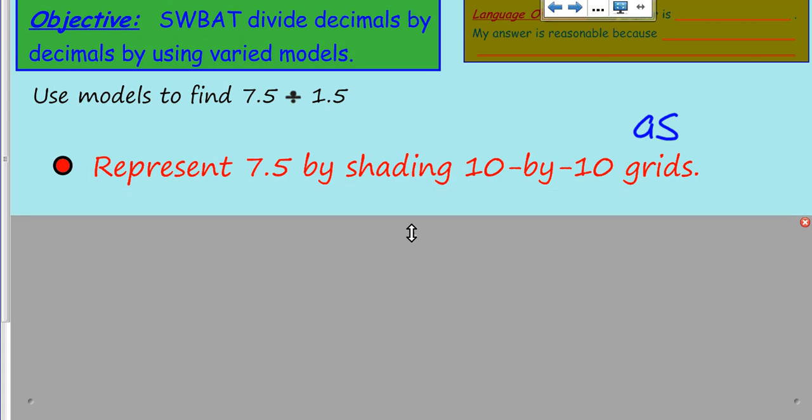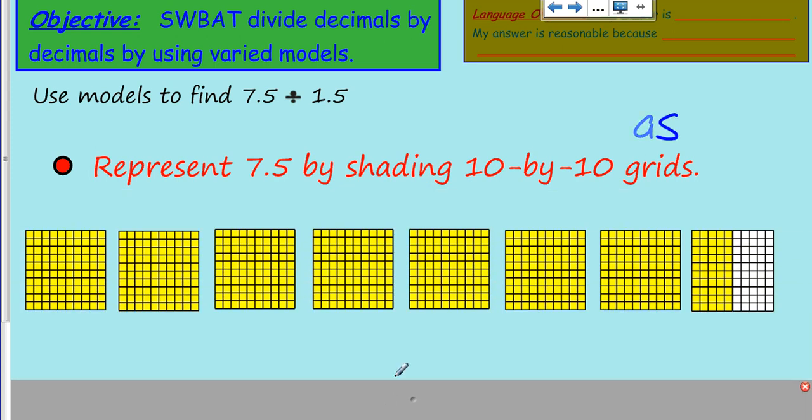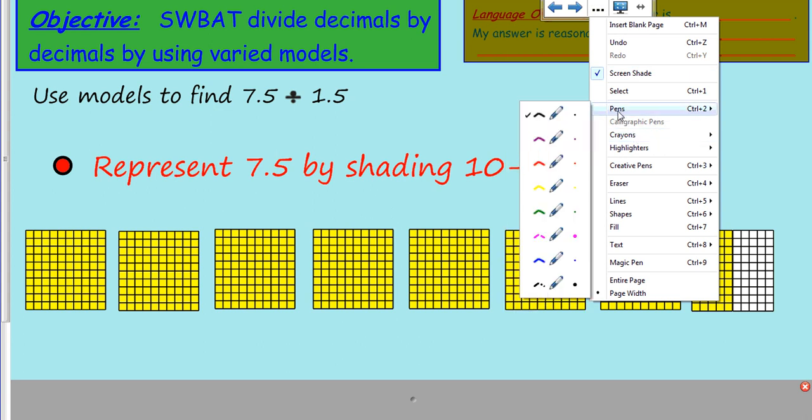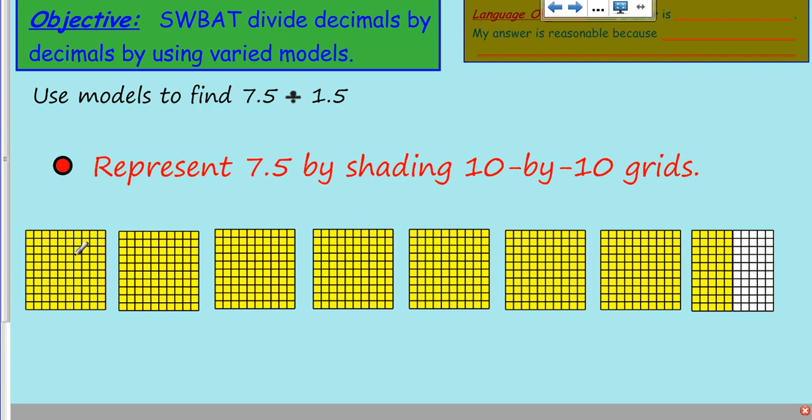When we come down here you can see I really went crazy with my 10 by 10 grids. What I'm going to do is I've represented this as seven and five tenths. Here's one whole, here's another whole. I have one, two, three, four, five, six, seven, and then notice I have a half of one, that's my point five. So now I have seven and five tenths representing that first step in solving this division problem using a model.